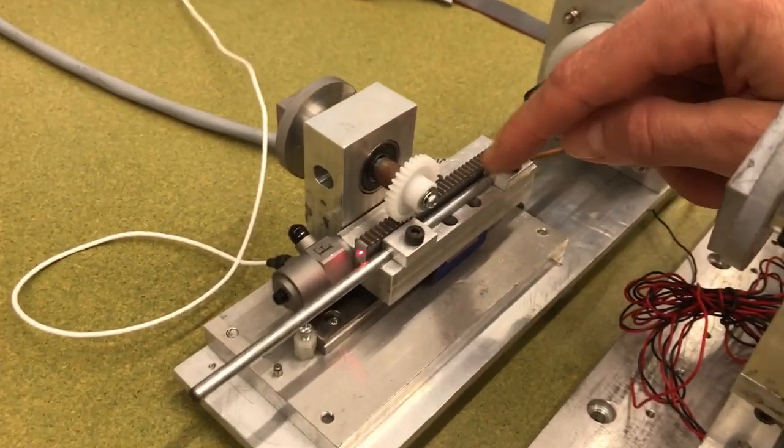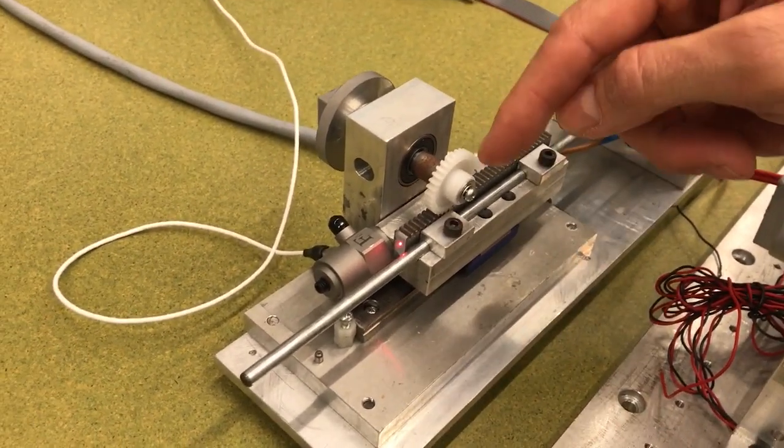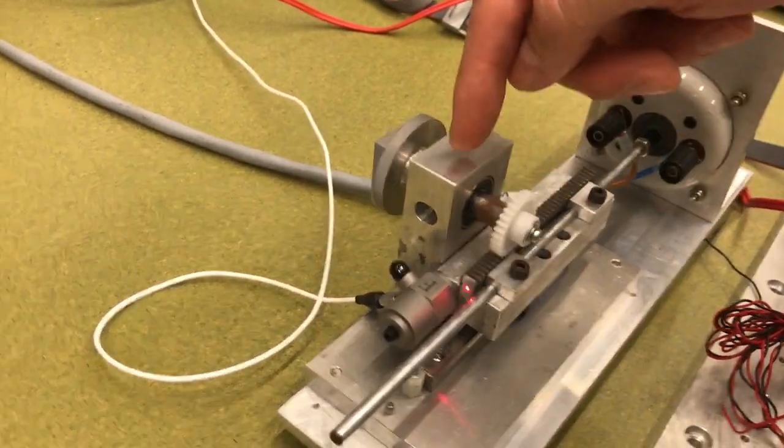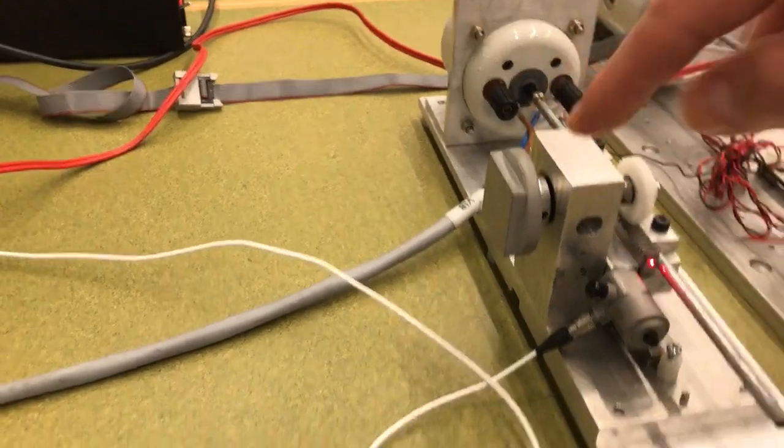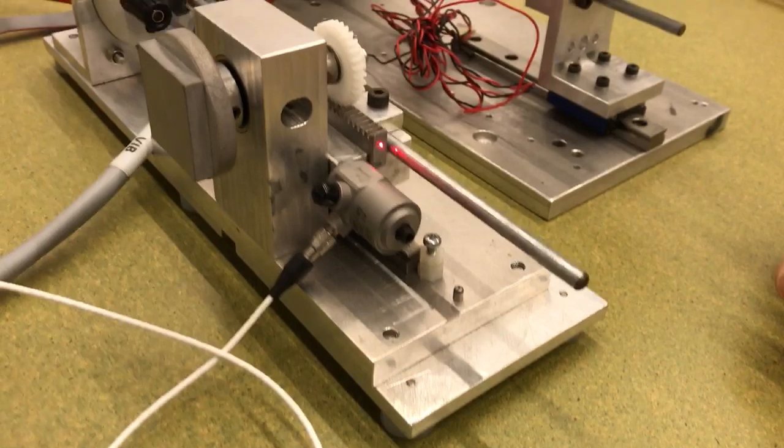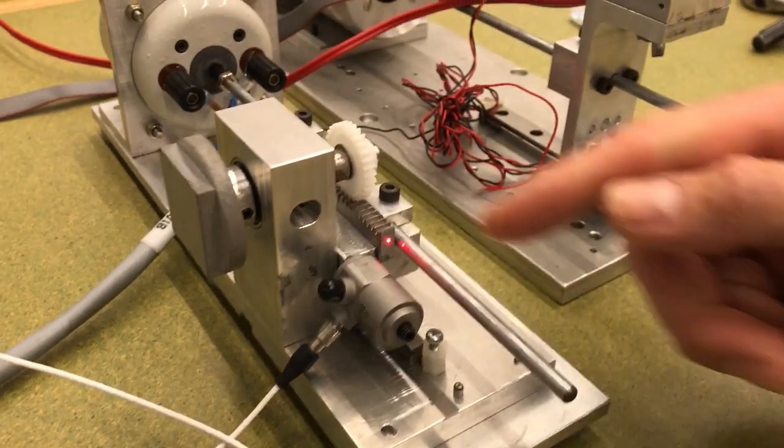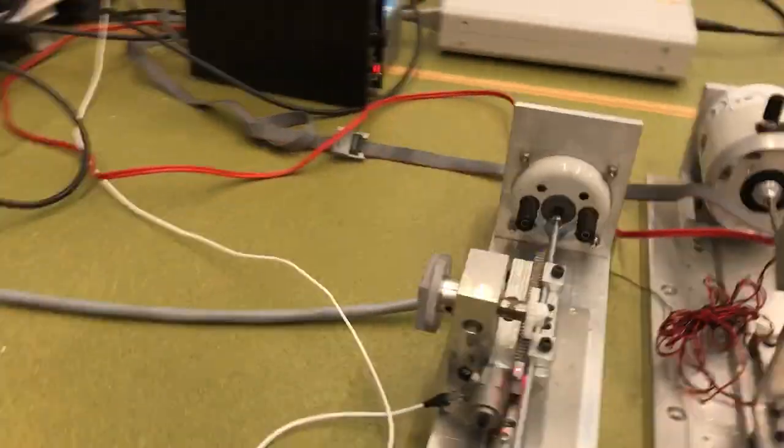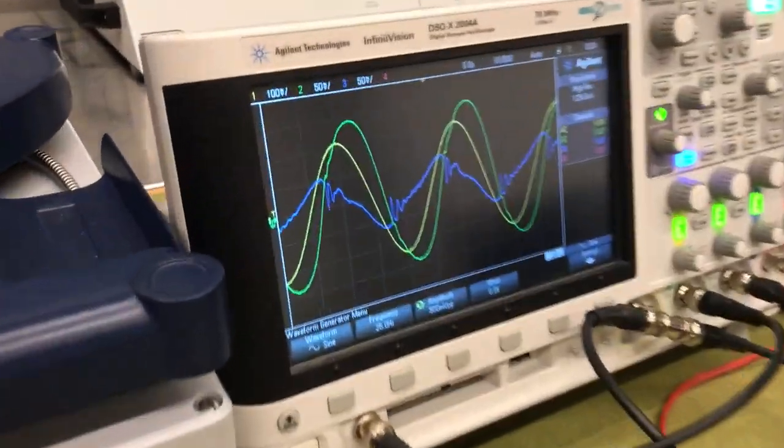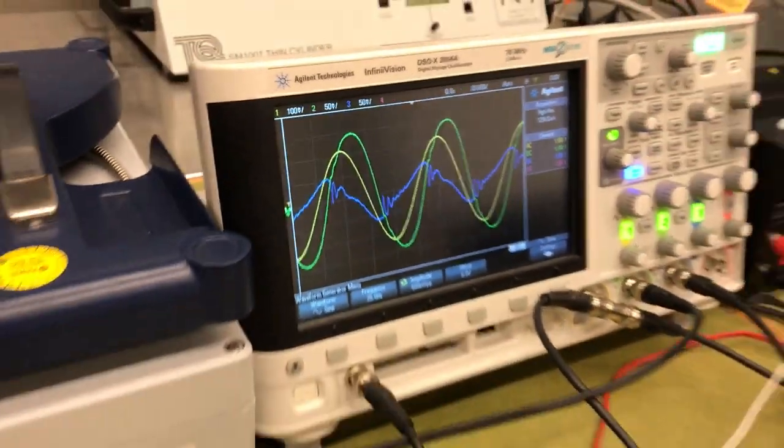And then we've got this mechanical arrangement here, which is a rack essentially, which is being driven by this rod connected to this gear, and the gear is connected through to our rotational target over here. Essentially the backlash here in the gearing, if I keep quiet, you can maybe even hear it. The clearance between the teeth of the gear and the teeth of the rack is what is leading to the square nature or the non-sinusoidal nature of that blue signal.